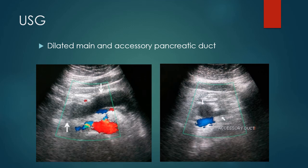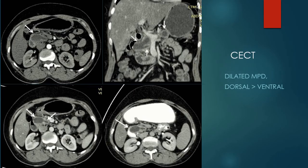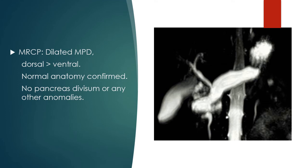Ultrasound was performed as a routine first-line investigation, which revealed dilatation of both the main and accessory pancreatic ducts. On first appearance it resembled a pseudocyst; however, on careful examination it was clear that it was the duct which was dilated. MDCT — multidetector CT — was then performed, confirming the findings. Both the main and accessory pancreatic ducts were dilated, with the dorsal duct equal to or slightly more prominent than the ventral duct.